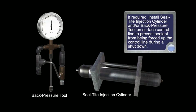If required, install seal-tight injection cylinder and or back pressure tool on surface control line to prevent sealant from being forced up the control line during a shutdown.